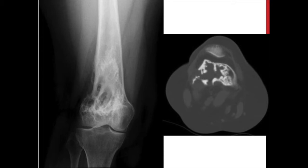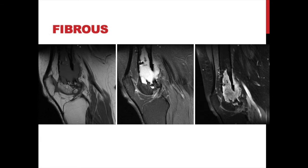The CT confirms the dense surrounding sclerosis, septations, cortical destruction, and soft tissue mass extension. On MRI the T1 shows iso-intense signal; T2 shows very bright signal; and the post-contrast image shows mixed intralesional uptake. A hallmark is darker areas that aren't the pitch-black coalescent hemorrhage of a sarcoma — instead a permeative, wispy darker signal hinting at the fibrous component that doesn't take up contrast dye.